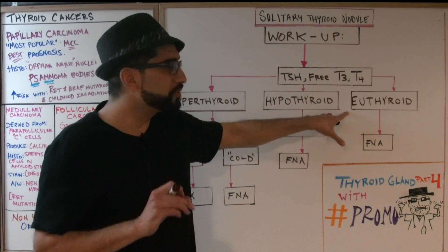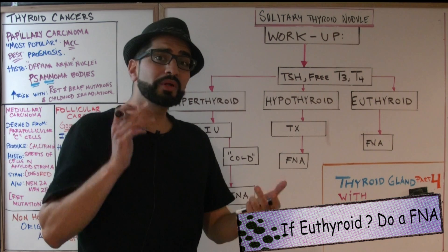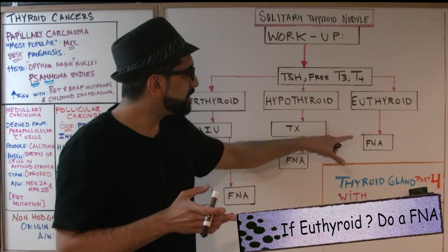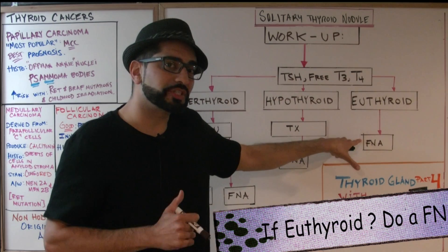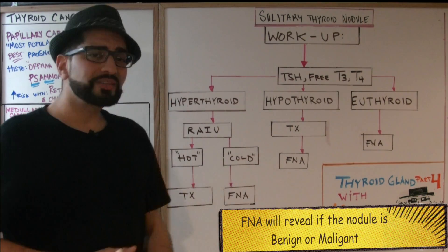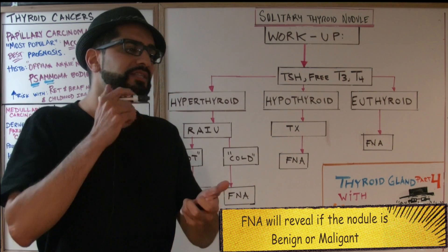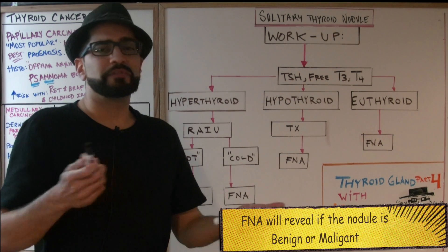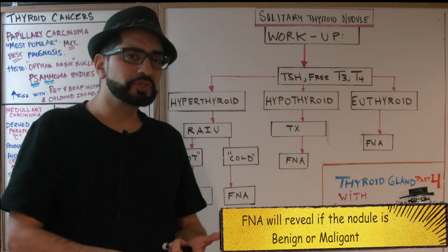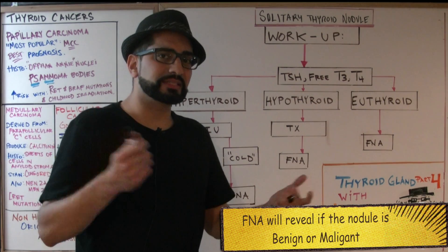If the patient ends up being euthyroid — meaning a normal TSH, normal T3, normal T4 — you should still have a high suspicion for cancer and you do an FNA, fine needle aspiration. When you do a fine needle aspiration, it's going to tell you a couple of different things as you assess the cells. It's either going to tell you it's a benign condition — in which case you observe the patient and may repeat an FNA in the future — or it could be malignancy, meaning cancer.